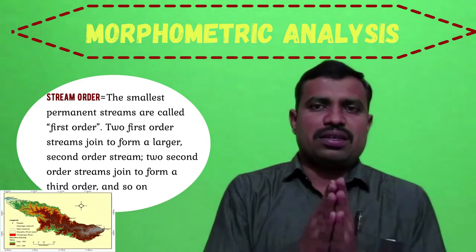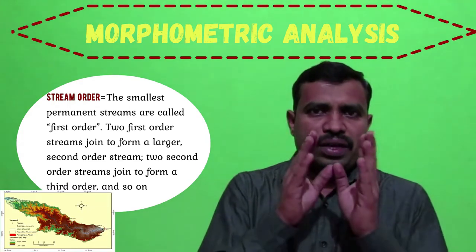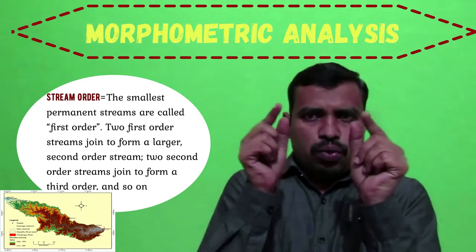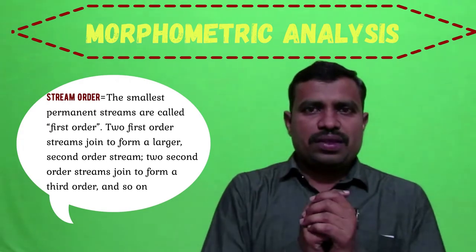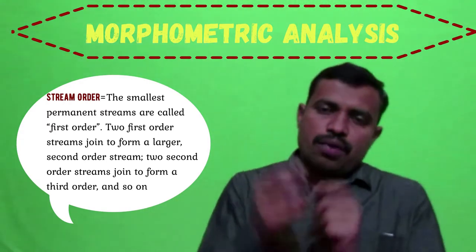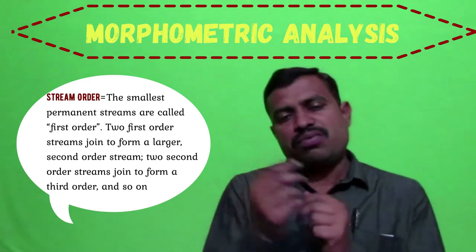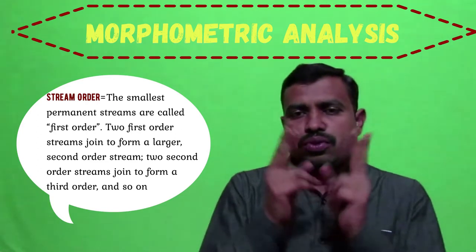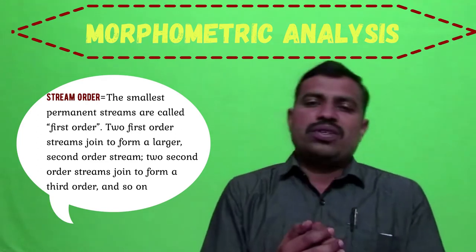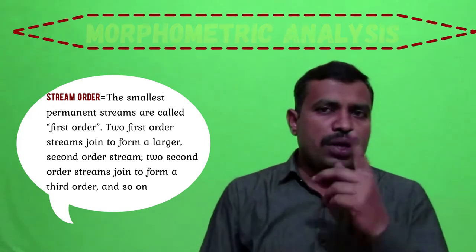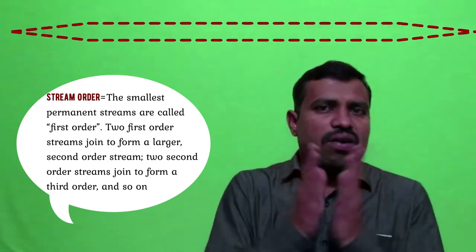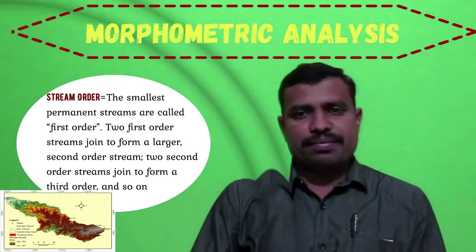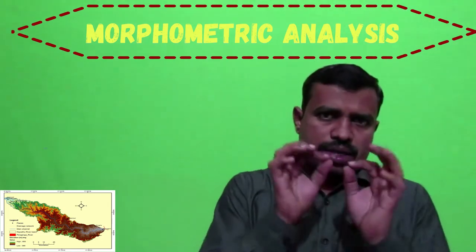Using the Strahler method, stream order is determined as follows: when two first-order streams join together, a second-order stream is formed; when two second-order streams join, a third-order stream forms; when two third-order streams join, a fourth-order stream forms, and so on. When two channels of different order join, the higher order is maintained.